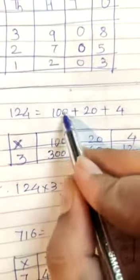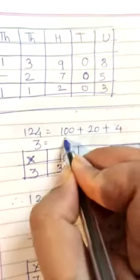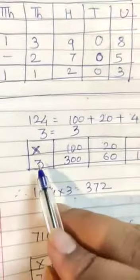And while doing the column, first do the column of multiplication sign. Then 100, 20 and 4. Into how much you have to do? Into 3. So 3 expanded form is 3. So 3 write down here.